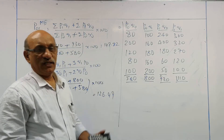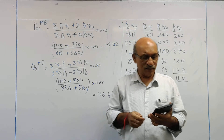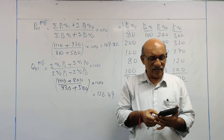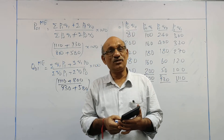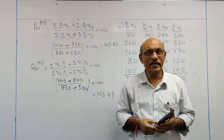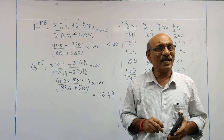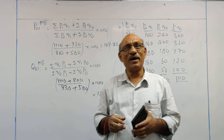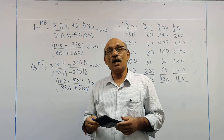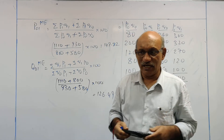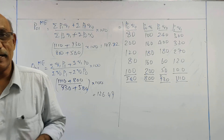So for this problem, we calculated price index numbers as well as quantity index numbers by five methods: Laspeyres method, Paasche's method, Dorbish-Bowley, Fisher, and Marshall-Edgeworth. Let's go to the next question.